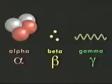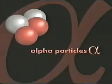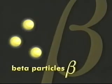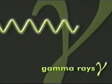There are three types of radiation — they're called alpha, beta, and gamma. Alpha particles consist of two protons and two neutrons. Beta particles are fast-moving electrons, while gamma rays are electromagnetic radiation, similar to X-rays.